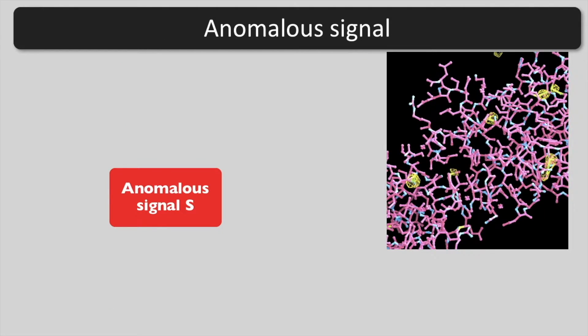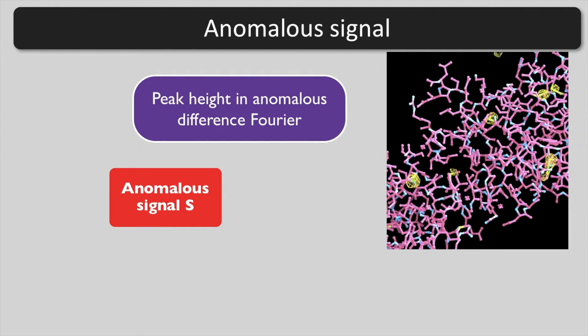The anomalous signal is the peak height in an anomalous difference Fourier, such as the yellow peaks in this picture. The anomalous signal is essentially the information per site in the anomalous differences.